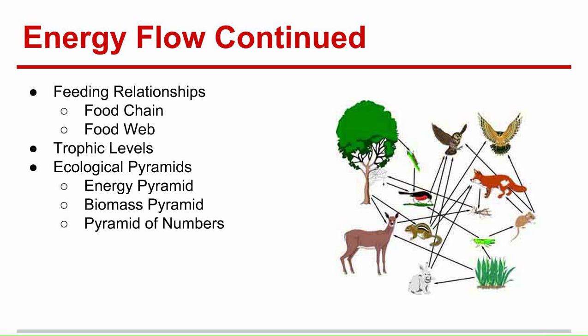It's the same for the biomass pyramid. The biomass pyramid represents the total amount of living tissue at each trophic level. At the bottom, the producers have the greatest amount of biomass, and it gets smaller and smaller. The pyramid of numbers shows the relative number of organisms at each trophic level.